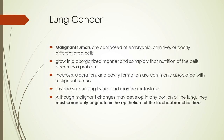Malignant tumors have primitive or poorly differentiated cells. They grow in a very random, chaotic, disorganized pattern and they do this fast. The nutrition of the cells becomes a problem — they have a high metabolic rate and high nutritional acquisition rate. This can cause necrosis, ulceration, and they can form cavities.